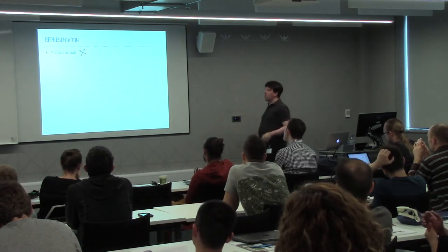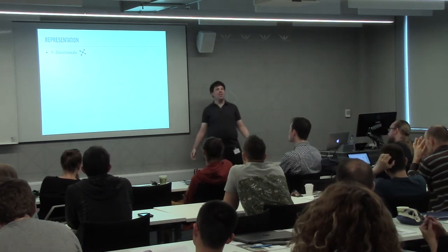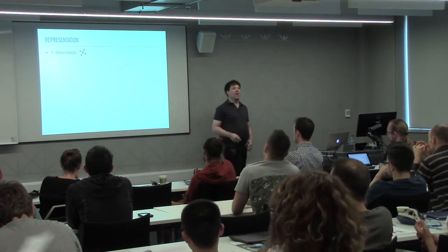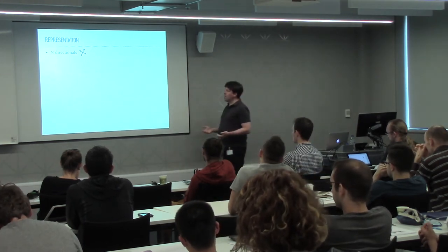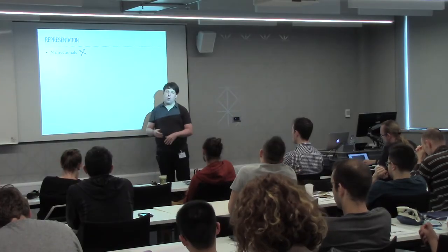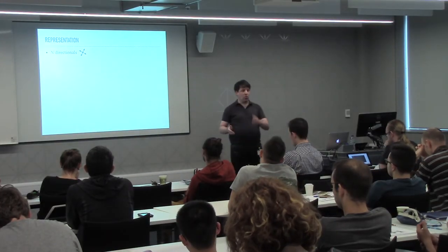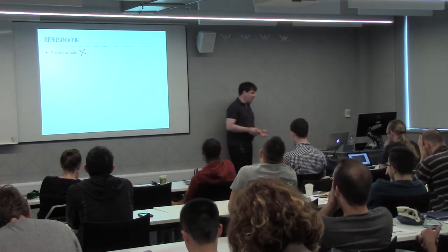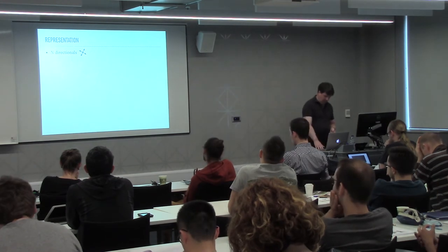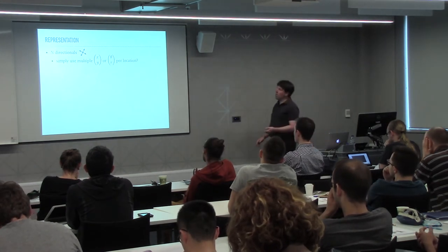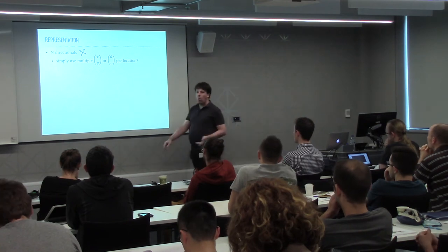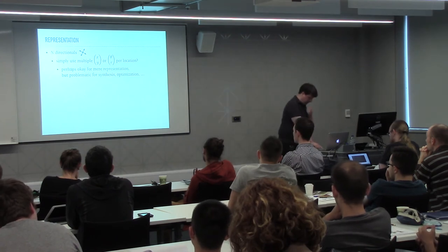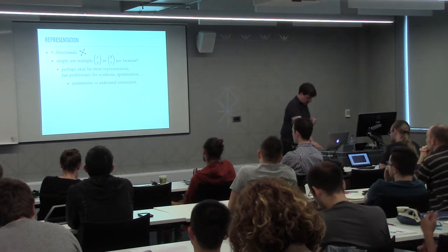Now let's move a little bit on. This was all about the single vector field — what do we do with n-directionals? First, let's touch the symmetric case. One thing we know about the symmetric case is that it doesn't have much redundant information: if you look at one vector you've seen them all, since the rest are just 2π/n rotations.